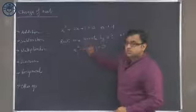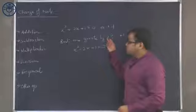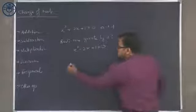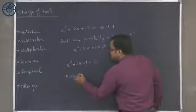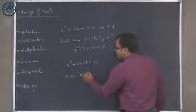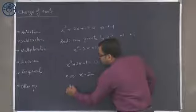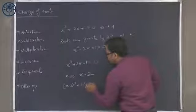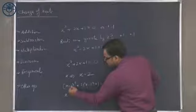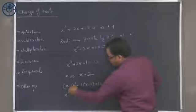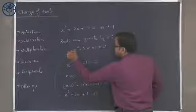Also, if in this equation I had substituted x minus 2, I would have got the same result. If I take x squared plus 2x plus 1 equal to 0 and replace x with x minus 2, this becomes x minus 2 whole square plus 2 into x minus 2 plus 1 equals 0, which becomes x squared minus 2x plus 4 minus 4 plus 1 equals 0 — the same result.